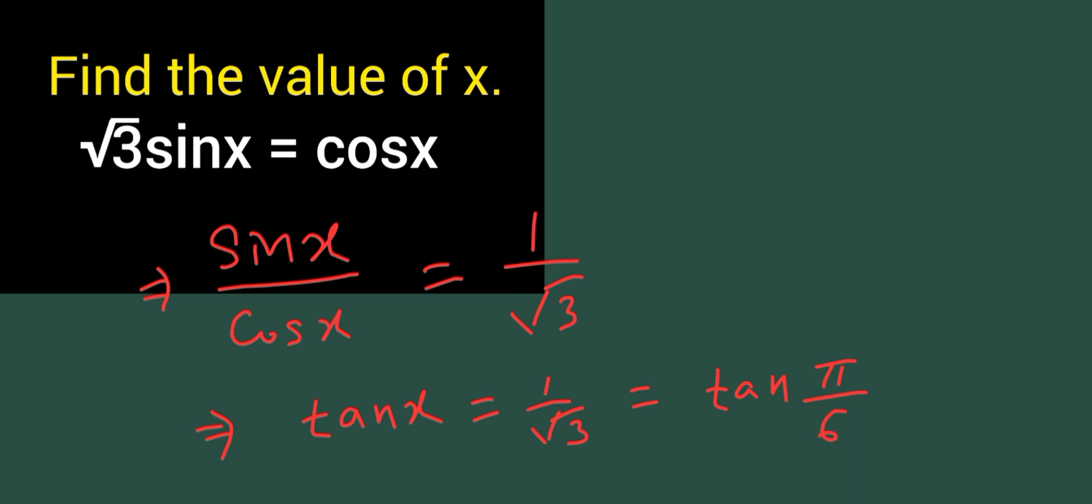Tan x is equal to tan pi upon 6, so x is equal to pi upon 6. Or you can say in degree it is 30 degree. In radian it is pi upon 6. In degree it is 30 degree. So this will be our answer.